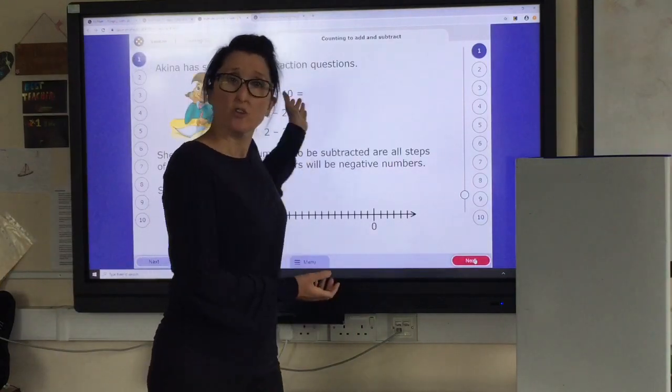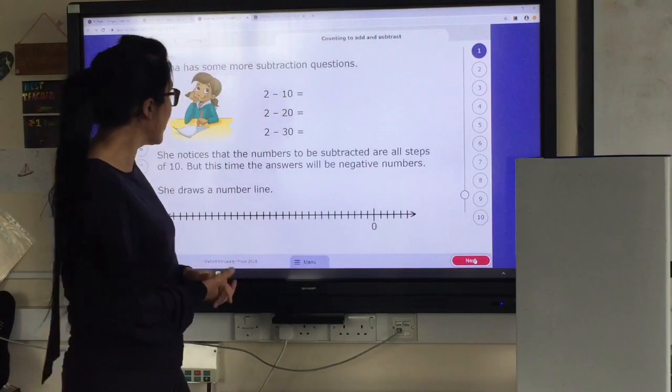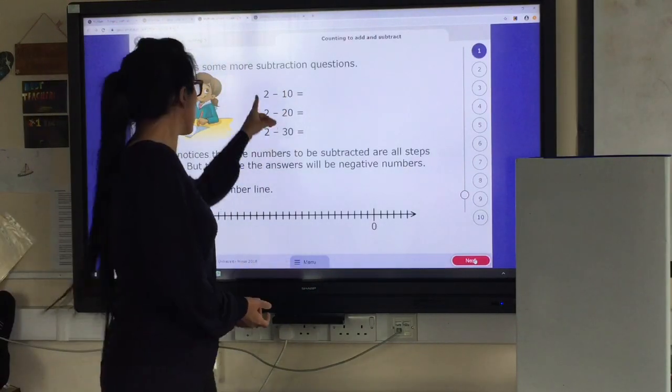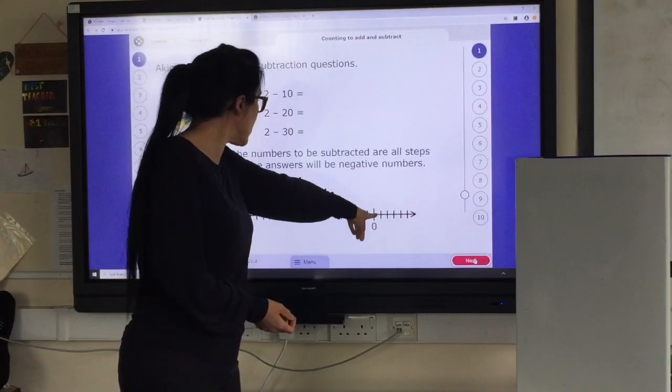Now, I haven't got my place value to work with here quite as easily. So my number line is going to become a little bit more important. But I'm starting off with 2. So on my number line I'm going to place 2.